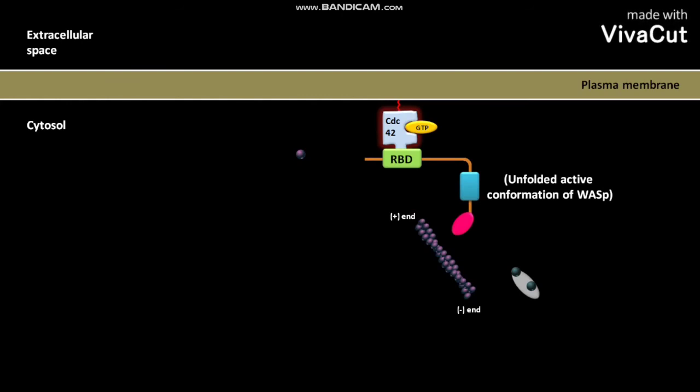In the unfolded active conformation of WASP, the intermolecular interaction is relieved and the acidic domain is exposed. This is the cytosolic preformed actin filament or F-actin.